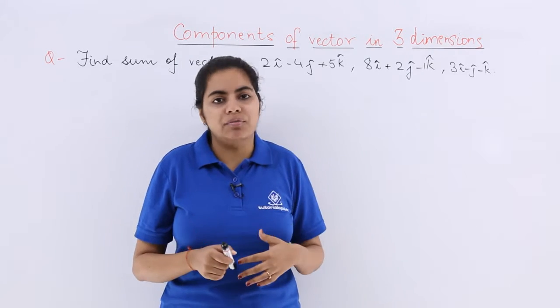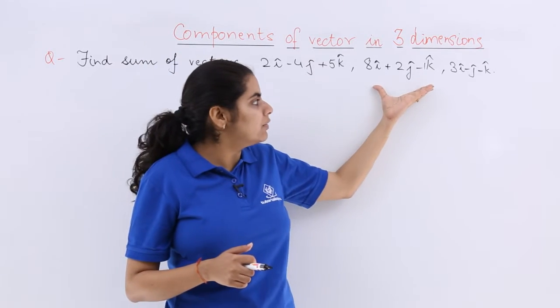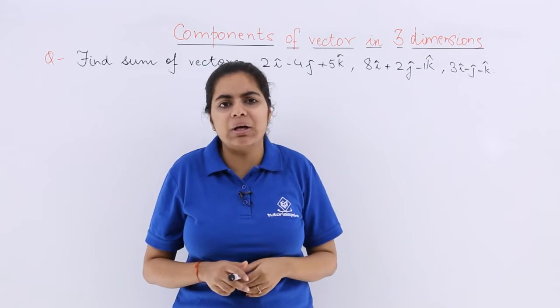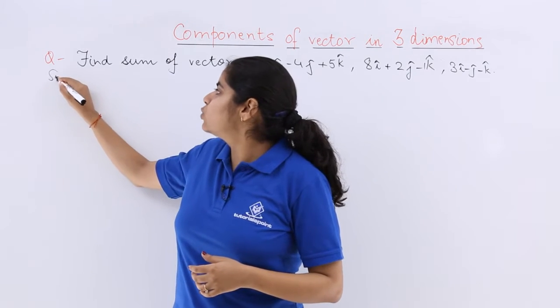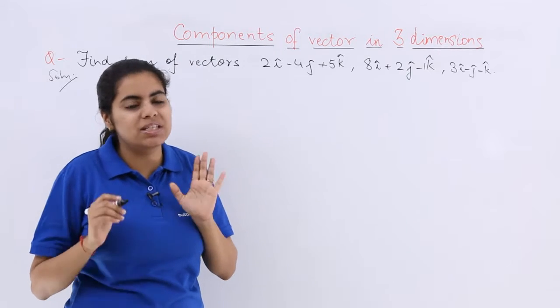And sum of vectors. If I consider this as your first vector, this is second vector, this is third vector. How to find out the sum? Let me write solution and clearly in one step only, orally let's do the solution.